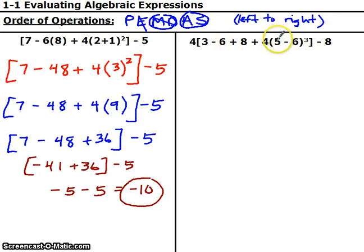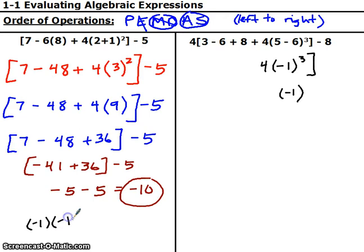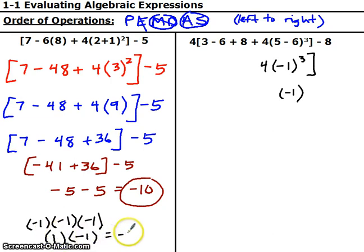The first thing I'm going to do is 5 minus 6, so that's negative 1 cubed times 4. Negative 1 cubed is negative 1 — it stays negative. Remember a cube power: that's negative 1 times negative 1 times negative 1. Negative 1 times negative 1 is positive 1, and positive 1 times negative 1 is negative 1. So when you cube it, it stays the same. Multiplying that by 4: 4 times negative 1 is negative 4.